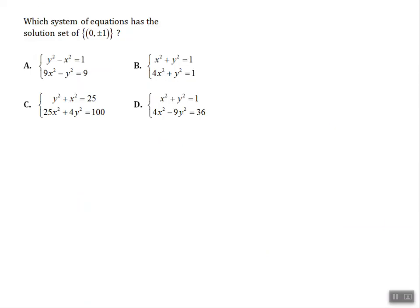Let's move on to example number two. It says, which system of equations has the solution set 0, plus or minus 1? Well, the plus or minus symbol just means that we're talking about two different ordered pairs. We're looking for 0, 1 and we're looking for 0, negative 1. Those are our two ordered pairs that are our solutions. And then we have a couple different answer choices for different systems.